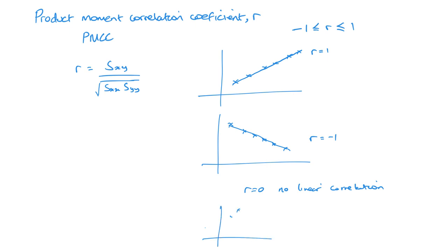If R equals 1 there's a perfect positive correlation; R equals −1 is a perfect negative correlation. The stronger the correlation, the closer R is to 1 or −1. When R equals 0 there is no linear correlation — note that a circular pattern would also give R ≈ 0 even though there is a pattern, because it's not linear. A low positive number is a weak positive correlation; a small negative number is a weak negative correlation. The closer to 0, the weaker the correlation.